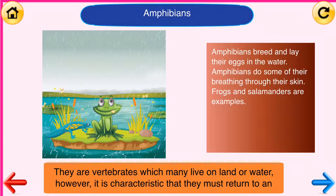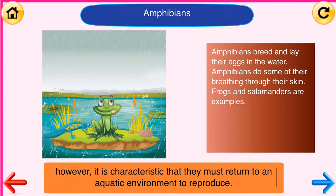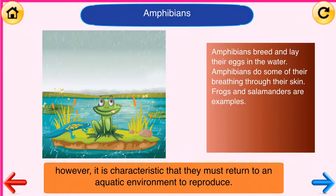Amphibians: they are vertebrates which many live on land or water. However, it is characteristic that they must return to an aquatic environment to reproduce. Amphibians breed and lay their eggs in water. Amphibians do some of their breathing through their skin. Frogs and salamanders are examples.